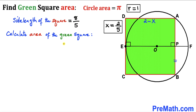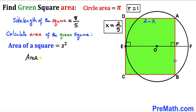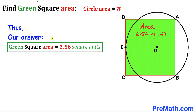For the final step, we calculate the area of the green square. Using the formula Area = s², where s = 8/5, we get Area = (8/5)² = 64/25 = 2.56 square units. So the area of green square ABCD is 2.56 square units. Thanks for watching — please subscribe for more exciting videos.